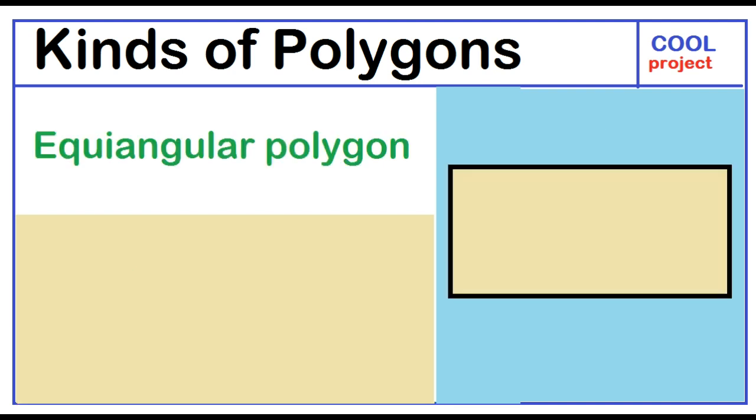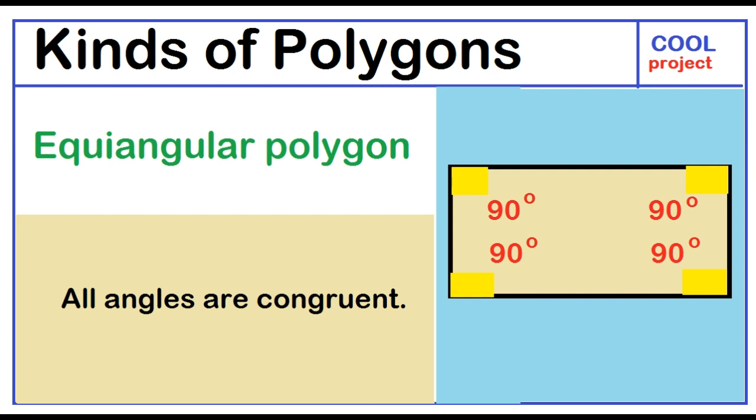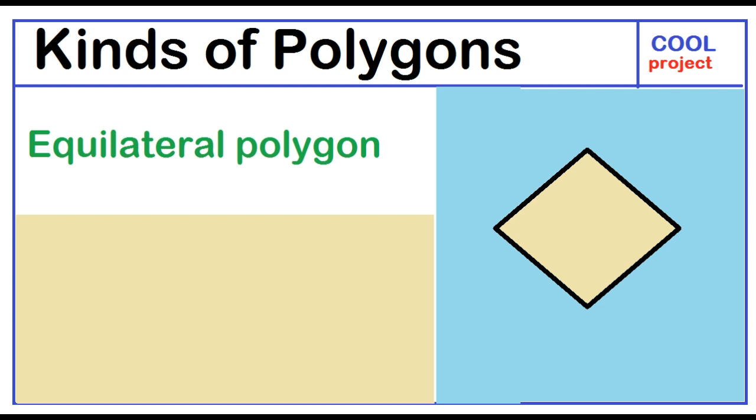Equiangular polygon. All angles are congruent. Equilateral polygon. All sides are congruent.